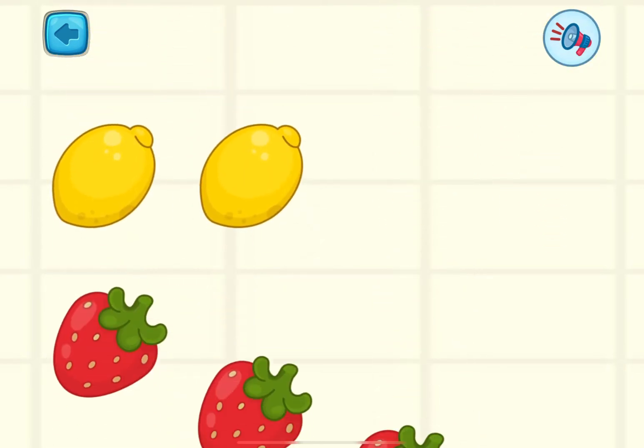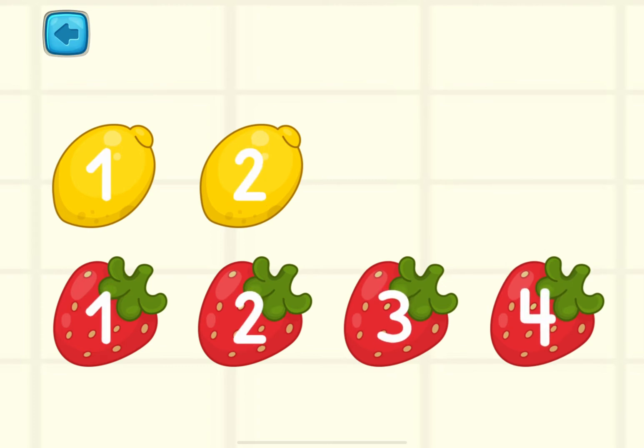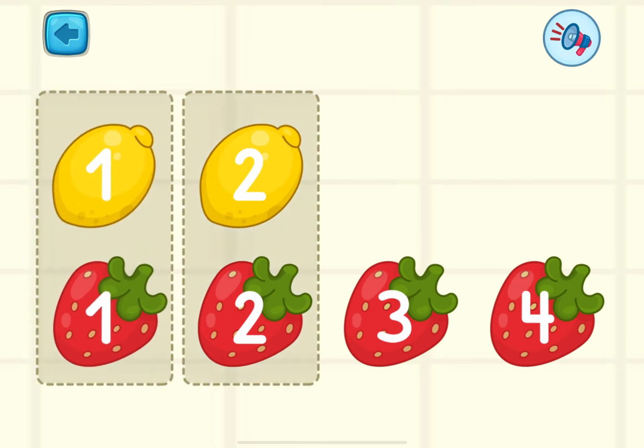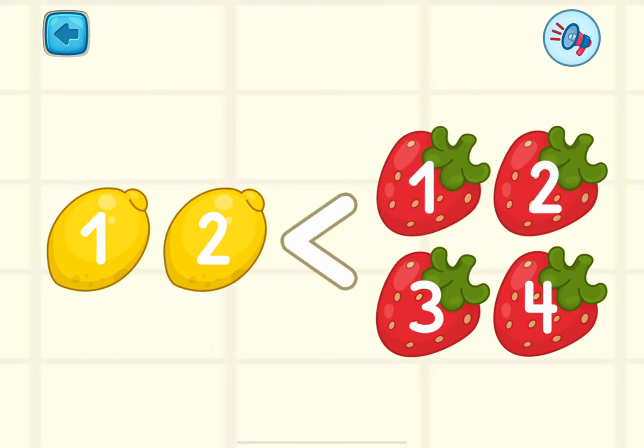Let's look at another case. Let's imagine that we have two lemons and four strawberries. What do you think? Are there more lemons or strawberries? Let's find a pair for each item again. We see that there is no pair for the third and fourth strawberries, and this means that there are fewer lemons than strawberries.